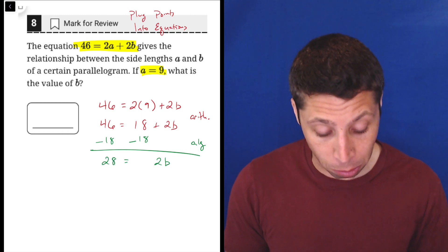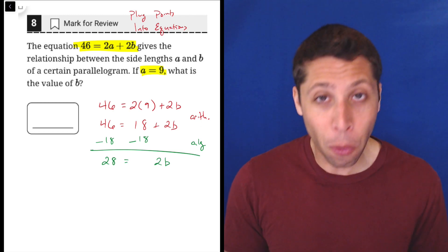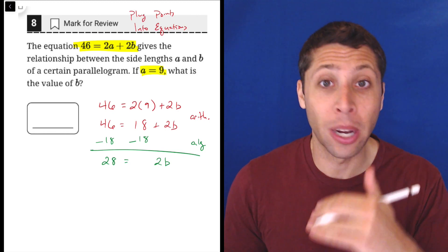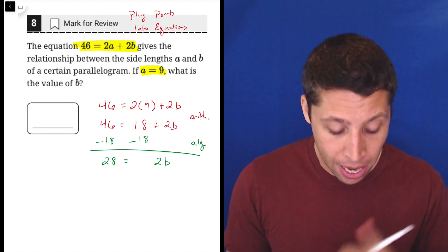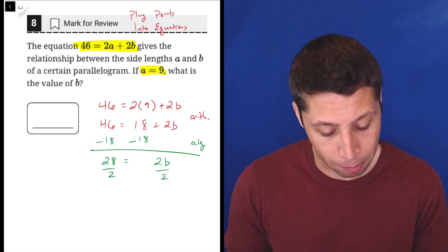Now we continue doing algebra, right? Because B is still not alone. Now it's got a 2 attached. But before, the 18 was attached through addition, so we use subtraction to make it go away. Now the 2 is attached through multiplication, so we use division to make it go away. So we divide both sides by 2.